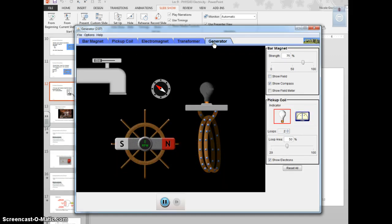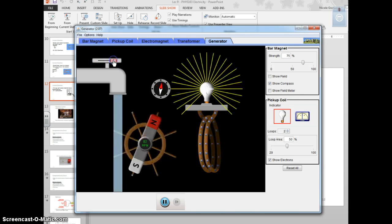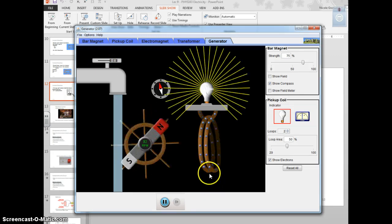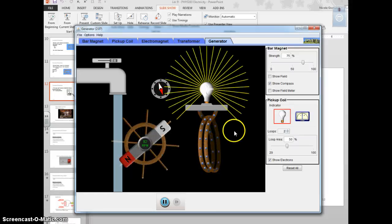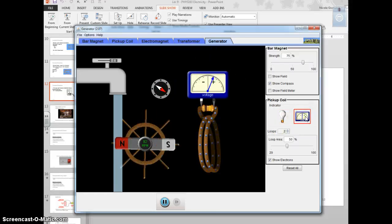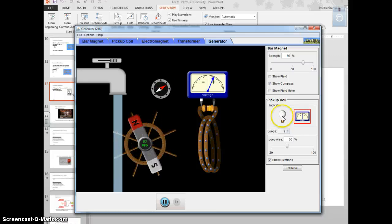Now, you can see that it goes back and forth because the pole changes as it goes through. So, we actually, as a power company, will use something like water to spin a magnet. And you can see the different poles of the magnet cause the electrons to go a different way, which is why we move back and forth. And this is called alternating current.